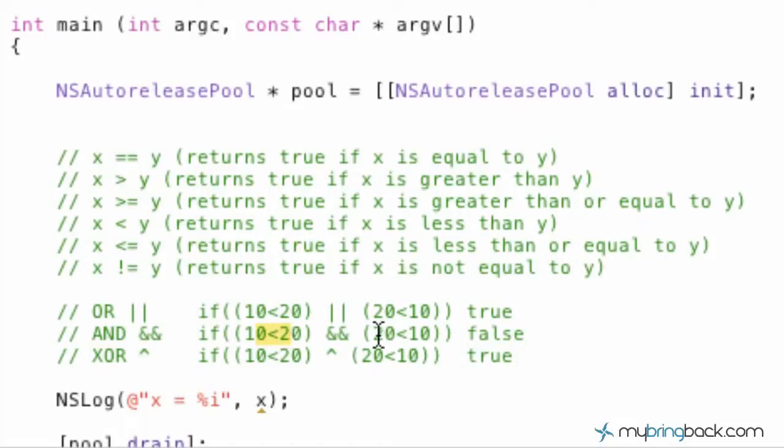it's the same operands as the or statement we just walked through, 10 is less, which is true, 20 is less than 10, which is false. So, given that it's an and statement here, one is true, one is false, therefore, the whole statement's false.